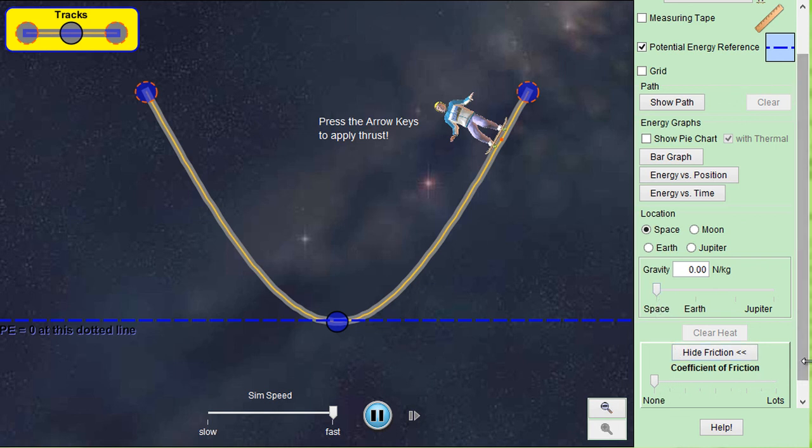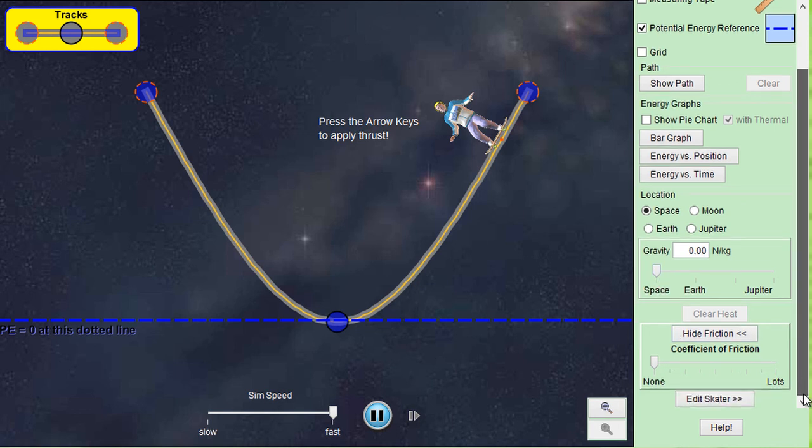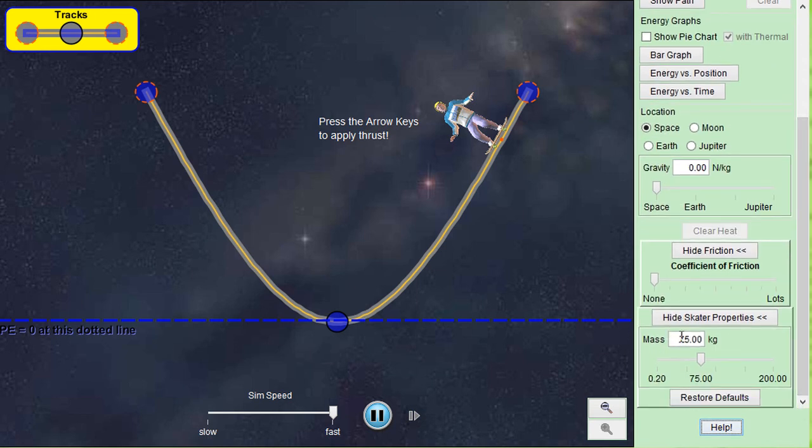You can try experimenting with large or small amounts of friction. You can add the skater somehow. You can change his mass. So you can see, does a heavier skater actually go higher on the other side? If we double his mass to 150, will that mean that he goes farther? These are all the kind of things that you can change.